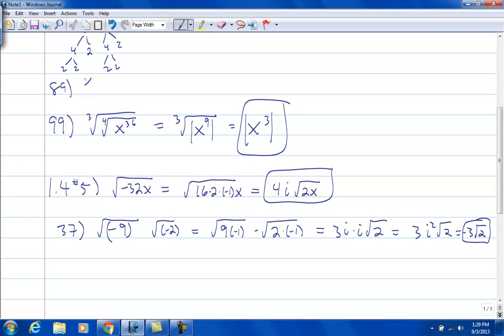We have x minus y over the square root of x plus the square root of y. And it says to simplify the radicals by rationalizing the denominator.